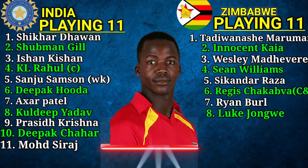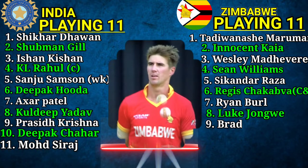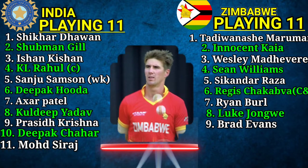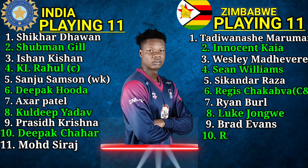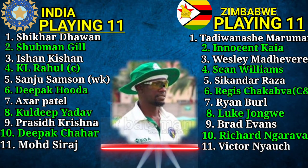Zimbabwe Bowling Order: 9. Brad Evans, Fast Bowler. 10. Richard Ngarava, Fast Bowler. 11. Victor Nyauchi, Fast Bowler.